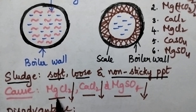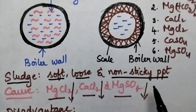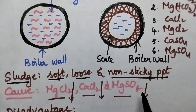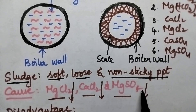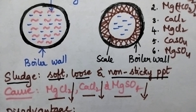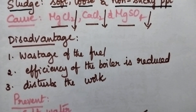Coming to the major causes of sludge: due to the presence of magnesium chloride, calcium chloride, or magnesium sulphate, whenever high temperatures are reached, these salts will precipitate out from the water. So the presence of magnesium chloride, calcium chloride, and magnesium sulphate are mainly responsible for the sludge formation.